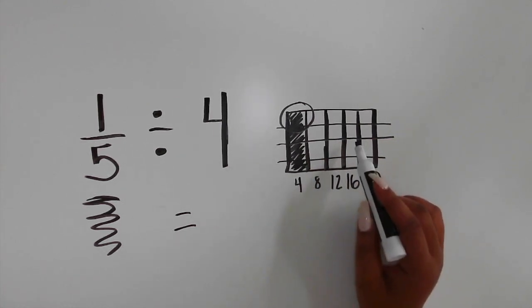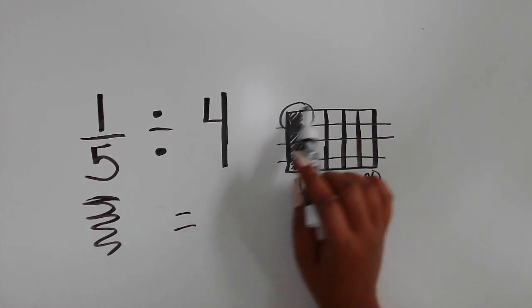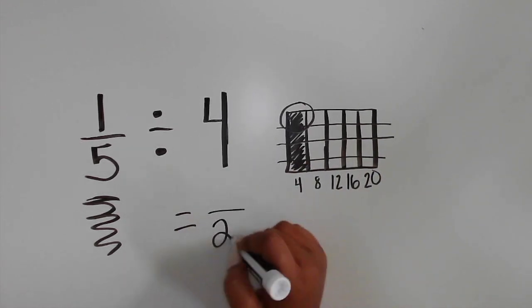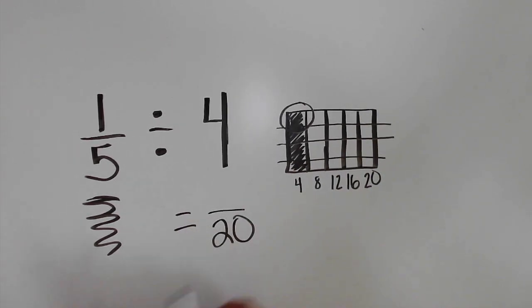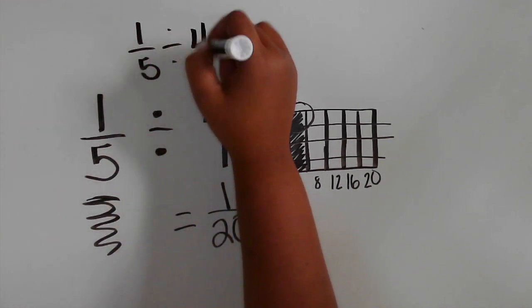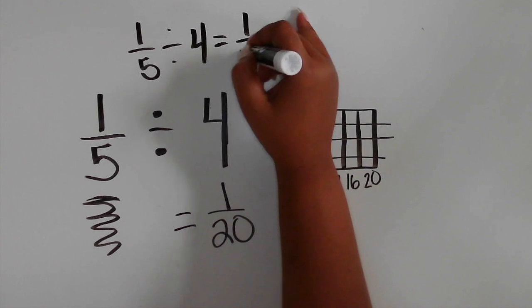Again, the goal is to determine the size of each, or one, part out of the whole. The total number of parts is 20, which is the denominator of the quotient, and because the focus is on one part, the numerator of the quotient is 1. 1 fifth divided by 4 equals 1 twentieth.